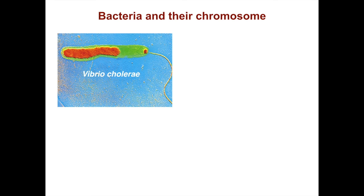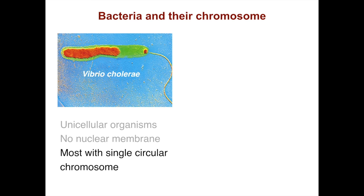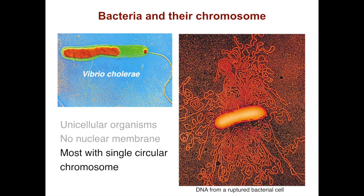Here's Vibrio cholerae, the agent of cholera. This is a bacteria — a unicellular organism with no nuclear membrane. Most bacteria, but not actually this particular one, have a single circular chromosome. Here's an example of what that chromosome would look like when you rupture a bacterial cell — you can see all of this DNA coming out of the cell.